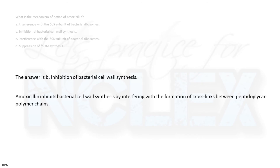b. Inhibition of bacterial cell wall synthesis. Amoxicillin inhibits bacterial cell wall synthesis by interfering with the formation of cross-links between peptidoglycan polymer chains.